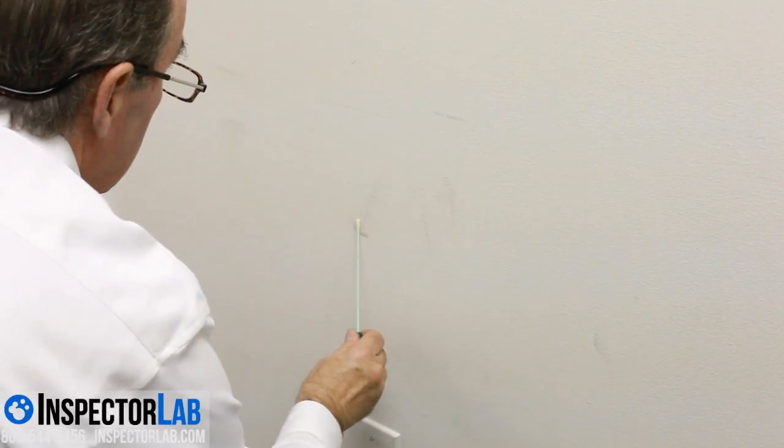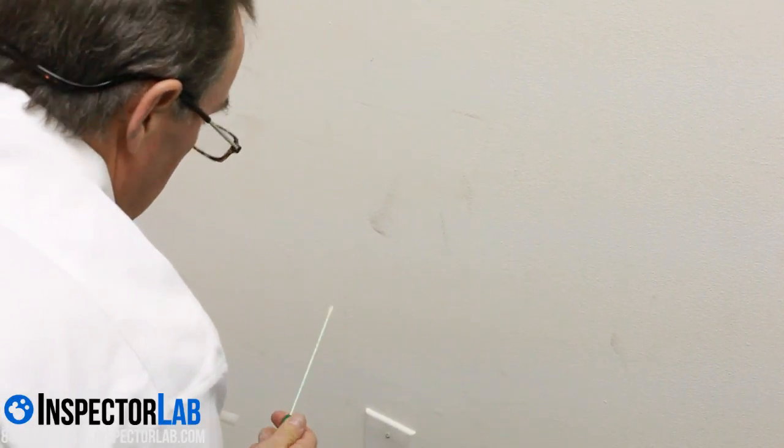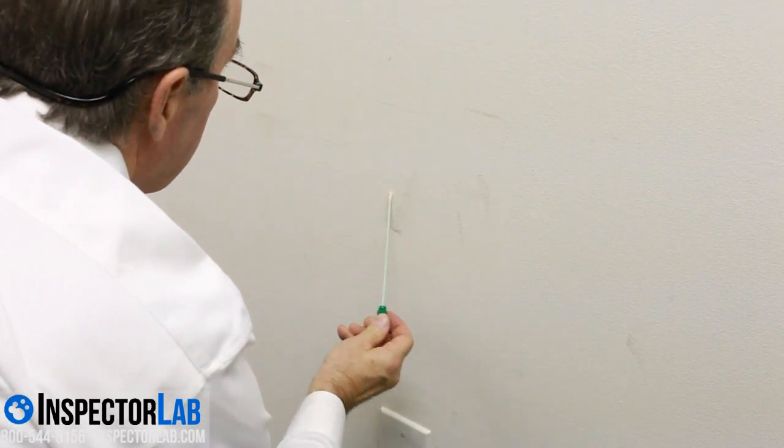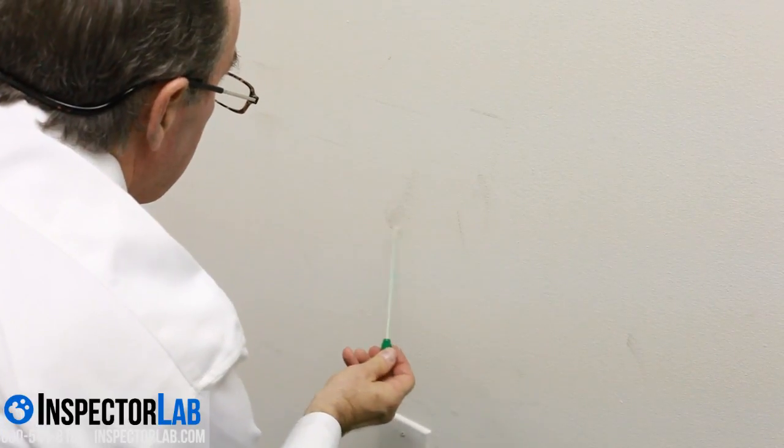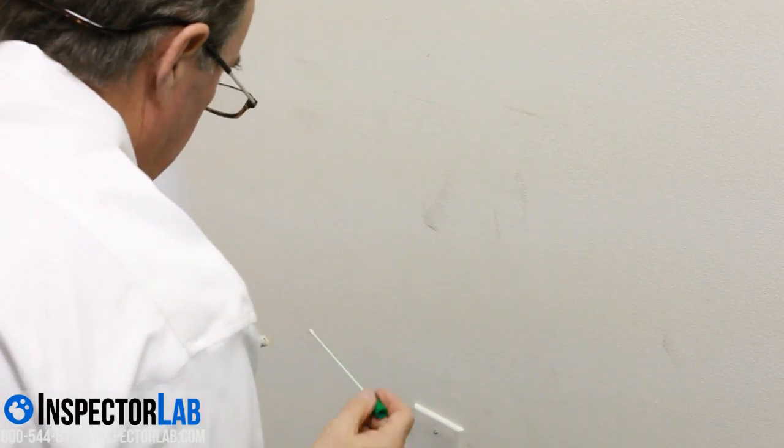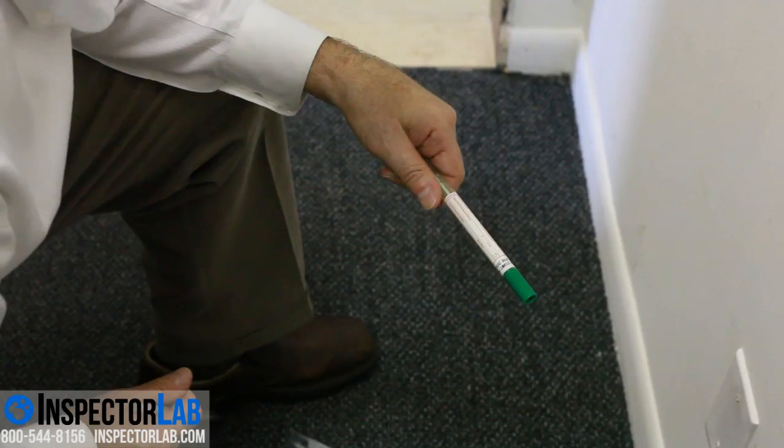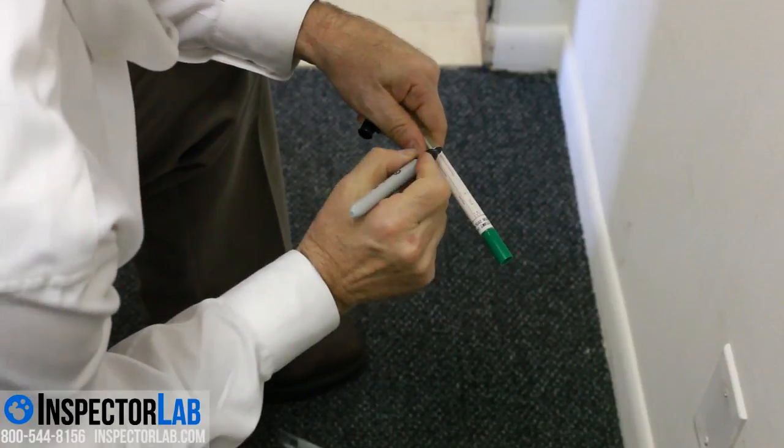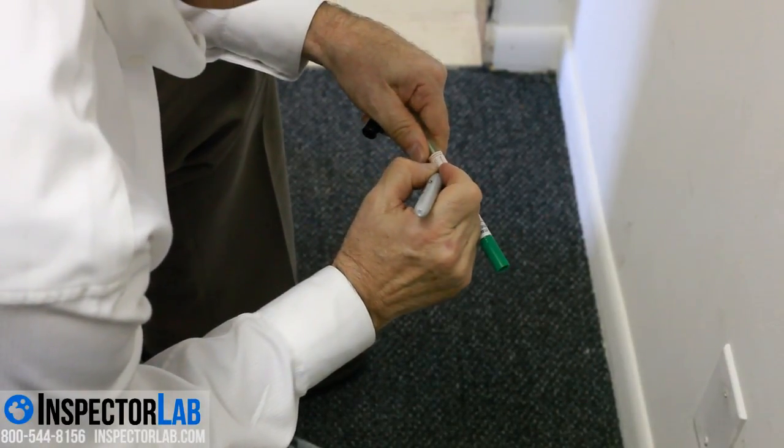Remove the swab from the package and sample the surface using a back and forth rubbing motion. It is helpful to rotate the swab in your fingers as you sample. After the sample is collected on the tip of the swab, carefully break the seal on the swab tube without touching the swab tip or placing the swab on any surfaces. Discard the swab tube cap and place the swab firmly into the sterile tube.